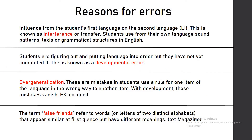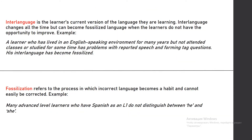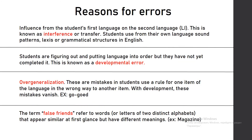Now I am going to provide you with the reasons for errors — there are six of them. The first one is interference: the influence from the student's first language on the second language. This is known as interference or transfer. Students use their own language's sound patterns, lexis, or grammatical structures in English.